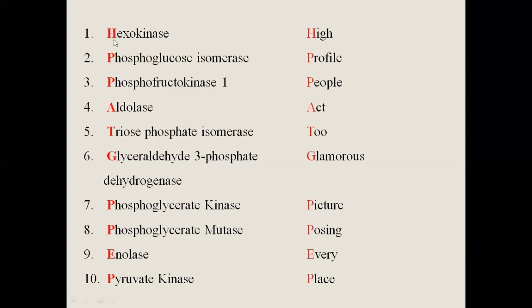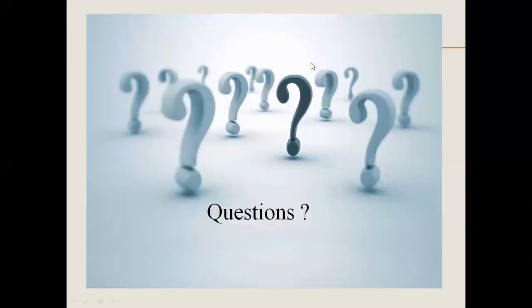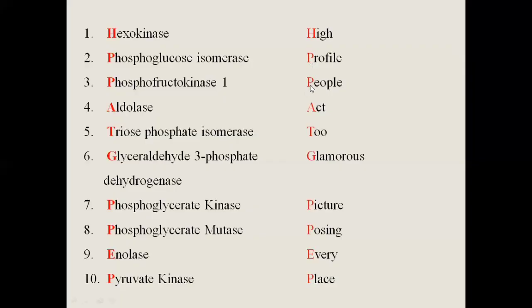To recap: 'H' in 'high' is for hexokinase. The full list of 10 enzymes is hexokinase, phosphoglucose isomerase, phosphofructokinase-1, aldolase, triose phosphate isomerase, glyceraldehyde-3-phosphate dehydrogenase, phosphoglycerate kinase, phosphoglycerate mutase, enolase, and pyruvate kinase. The mnemonic is: 'High profile people act through glamorous picture posing every place.'